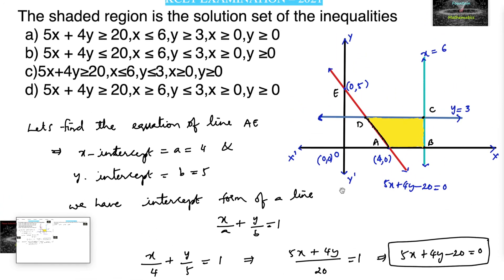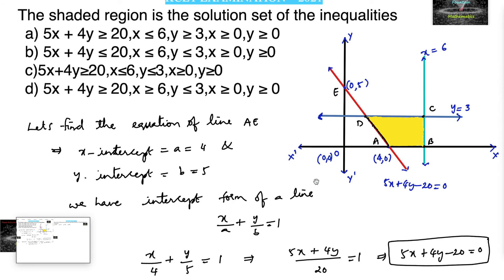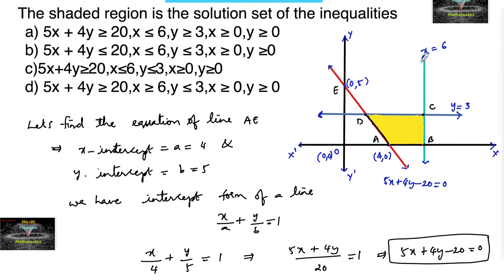This gives us the first, third, and fourth options to consider. Moving to the next line: x = 6. The shaded region is clearly to the left, so x ≤ 6. One more inequality: y = 3, and the shaded region is below y = 3, giving us y ≤ 3.